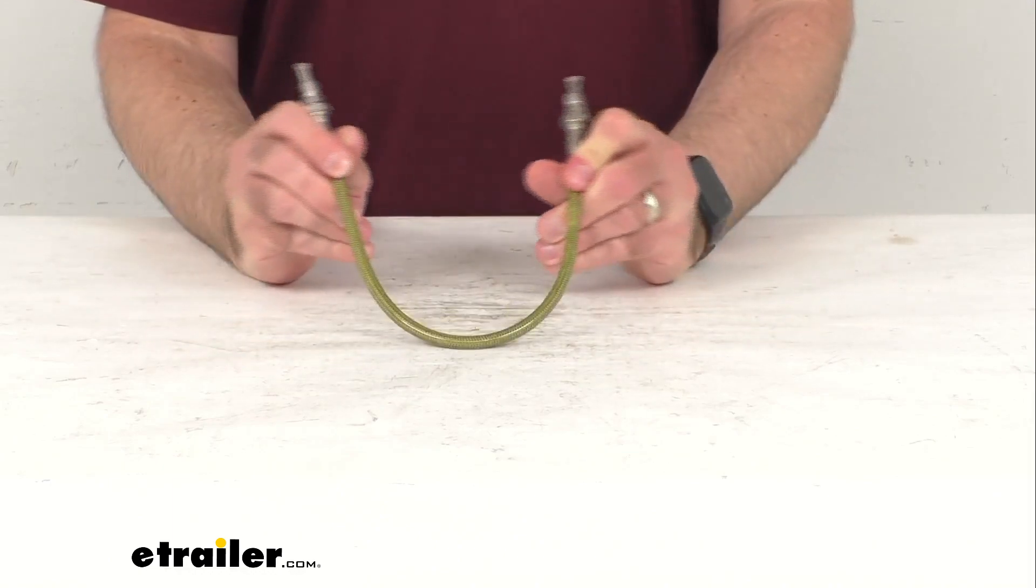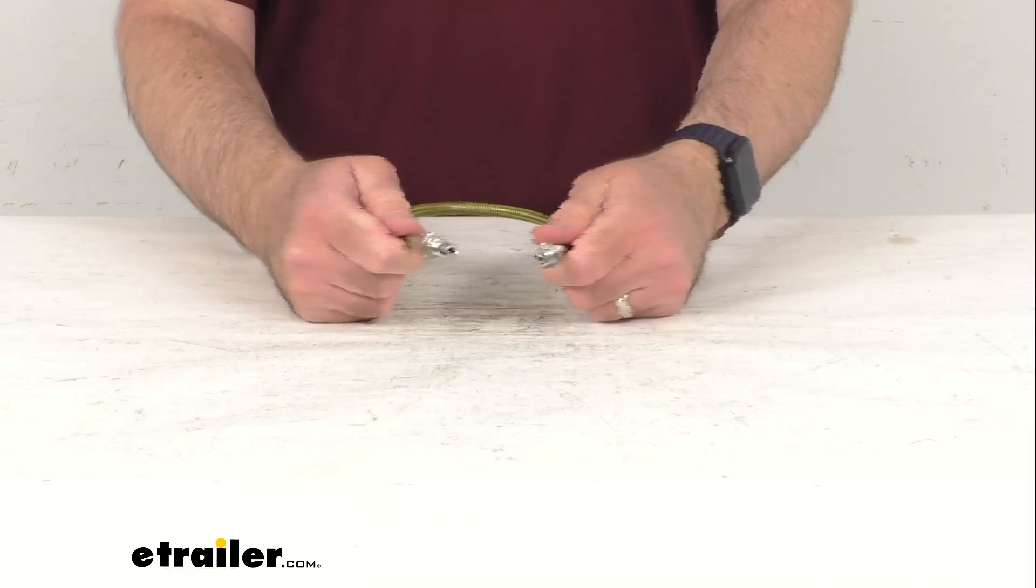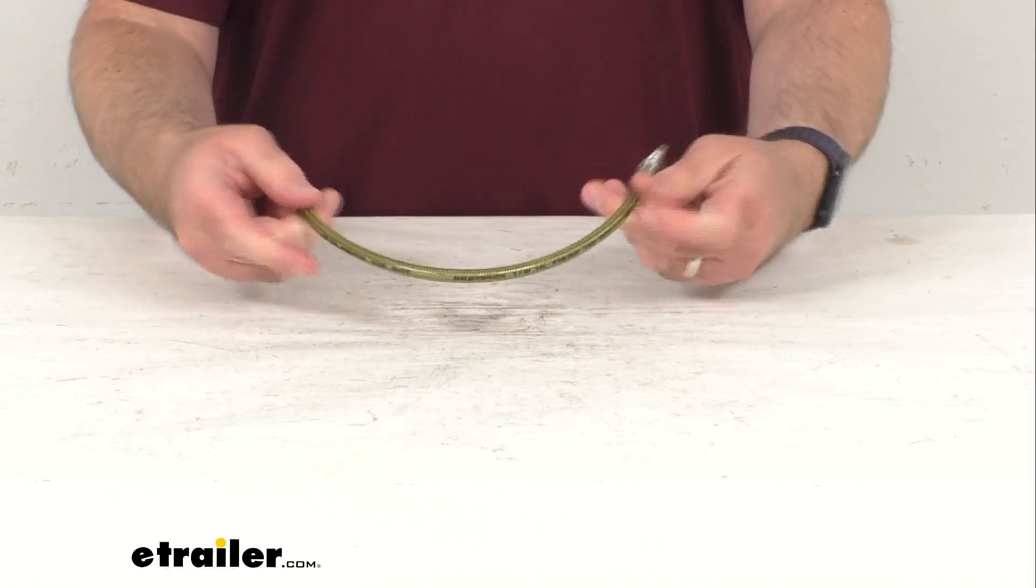The flexible design makes this hose perfect for use with fold away trailer tongues, disc brakes, and torsion axles.